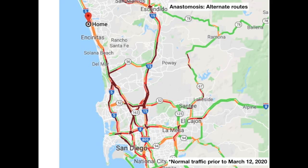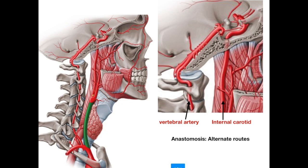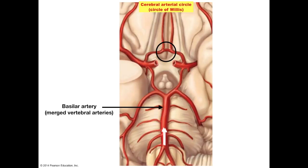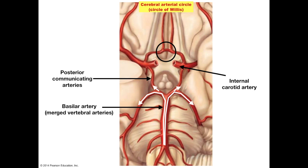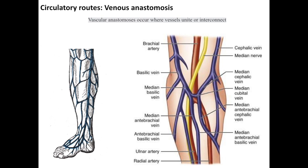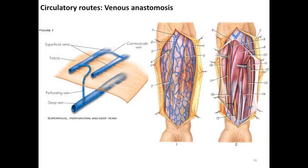An arterial anastomosis is seen around joints where blood flow can be occluded by certain movements, so flow blocked in one vessel is shunted to a more open one — like taking an alternate route when one road is blocked. Another example is the circle of Willis, where blood flow from the vertebral arteries supplying the posterior brain connects with the internal carotid arteries through the posterior communicating artery, allowing the middle and anterior brain to still receive blood if the internal carotid is blocked. Similarly, the anterior communicating artery can bring blood to the other side of the brain if one internal carotid is occluded. Venous anastomoses are even more common throughout the body.